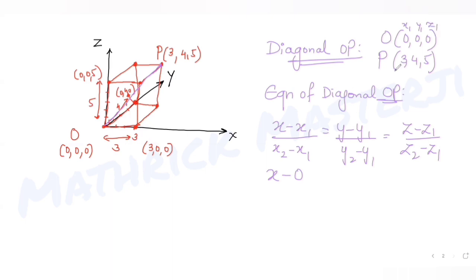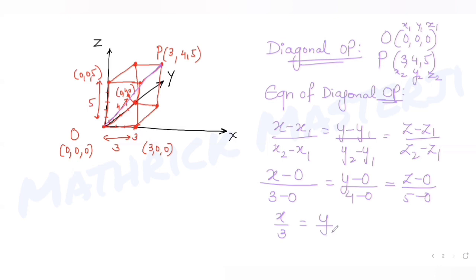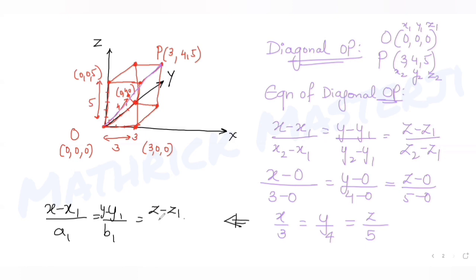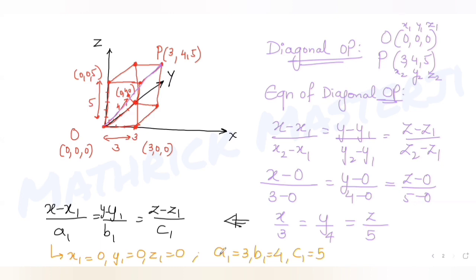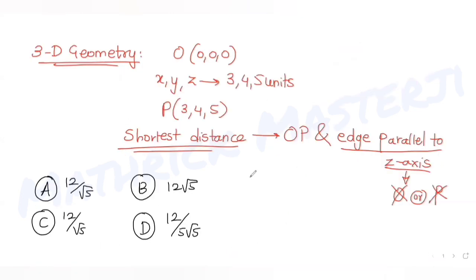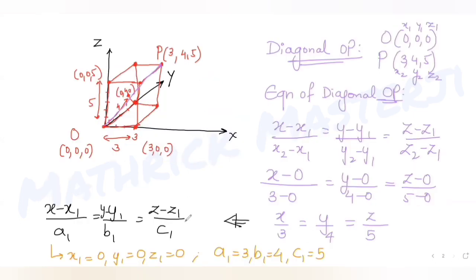Using the standard line equation (x - x1)/(x2 - x1) = (y - y1)/(y2 - y1) = (z - z1)/(z2 - z1), with O at (0,0,0) and P at (3,4,5), I get x/3 = y/4 = z/5. Comparing with the form (x - x1)/a1 = (y - y1)/b1 = (z - z1)/c1, I get x1=0, y1=0, z1=0, and a1=3, b1=4, c1=5.